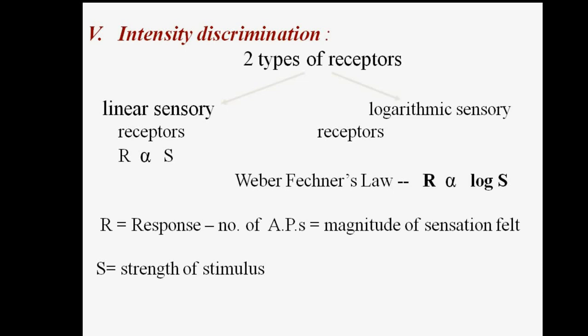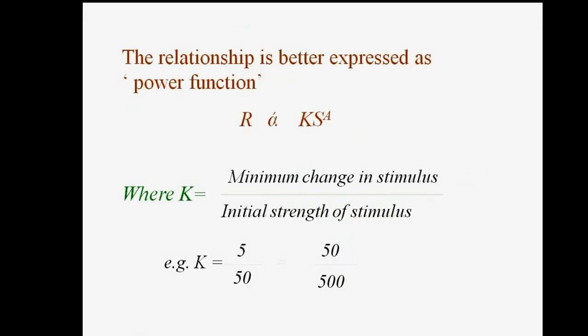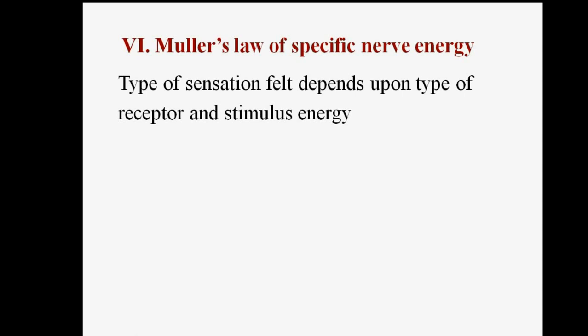This is the basic difference between linear sensory receptors and logarithmic sensory receptors. Figures show the stimulus strength for linear sensory receptors versus logarithmic sensory receptors. The relationship is better expressed as a power function: R ∝ K × (S/A), where K equals the minimum change in stimulus divided by the initial strength of stimulus. The next property is Muller's law of specific nerve energy: the type of sensation felt depends upon the type of receptor and stimulus energy.